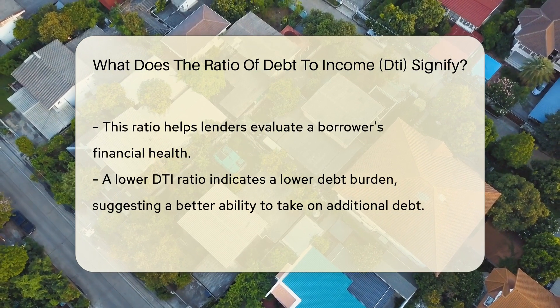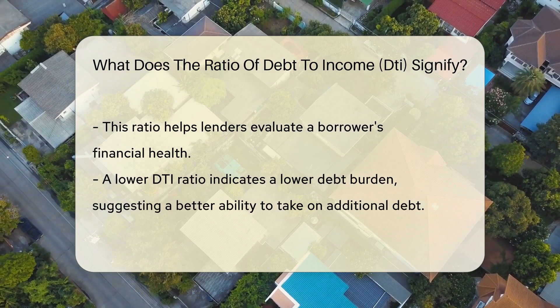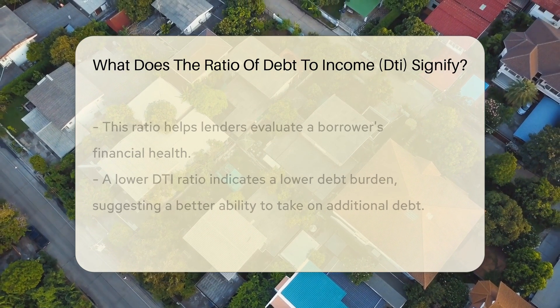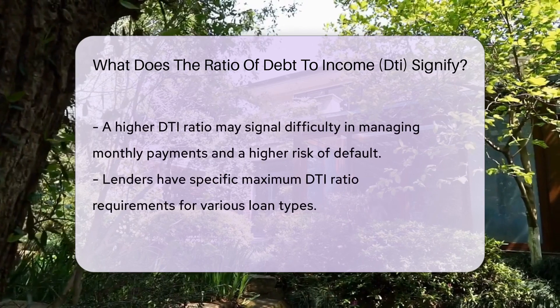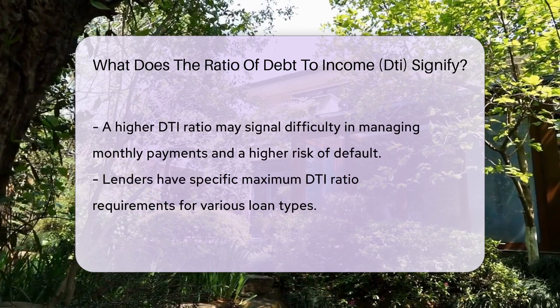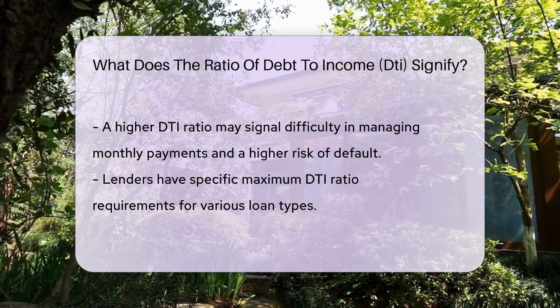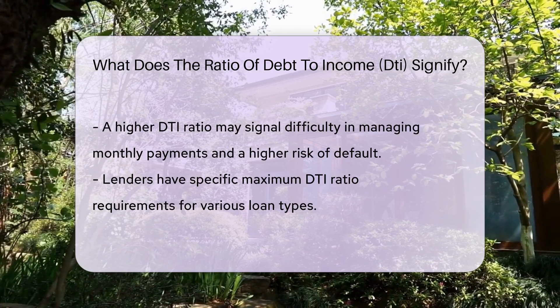A lower DTI ratio indicates that a person has a lower debt burden and may be more likely to repay additional debt. And conversely, a higher DTI ratio suggests that a person may struggle to make monthly payments and could be at higher risk of default.